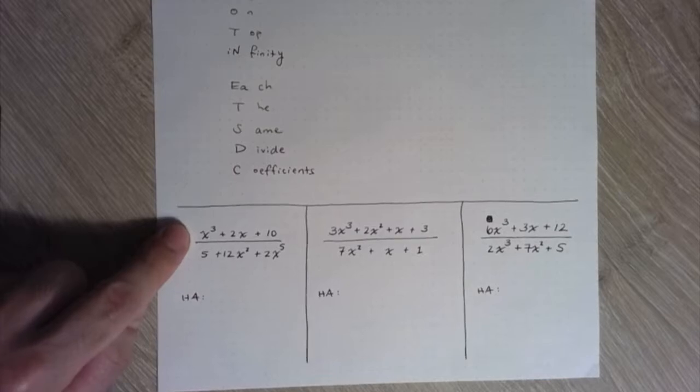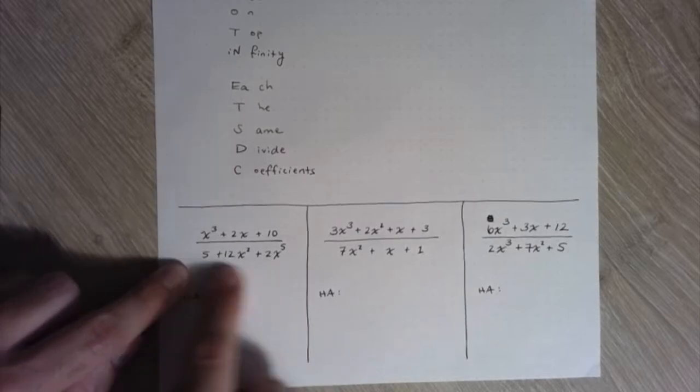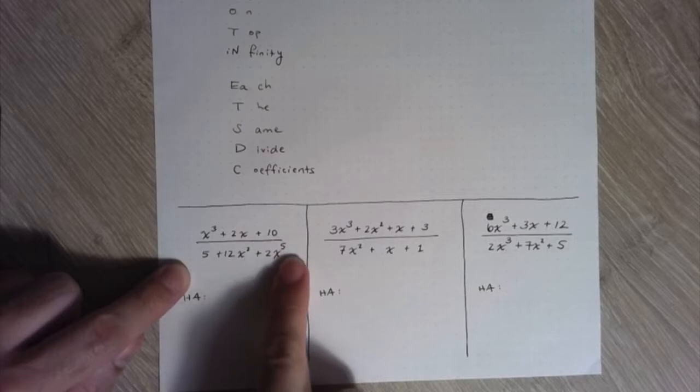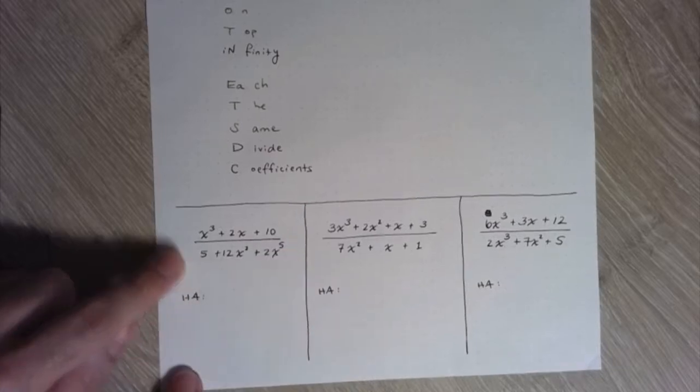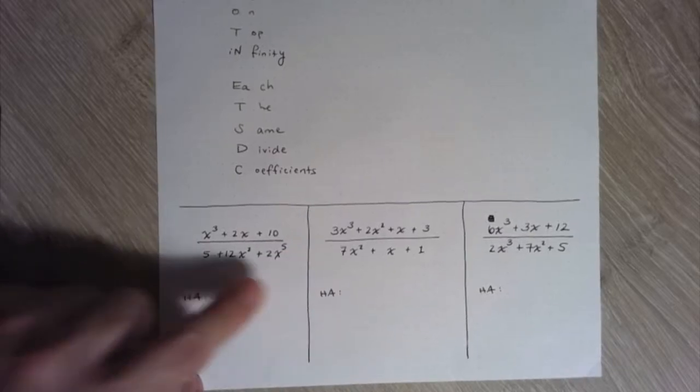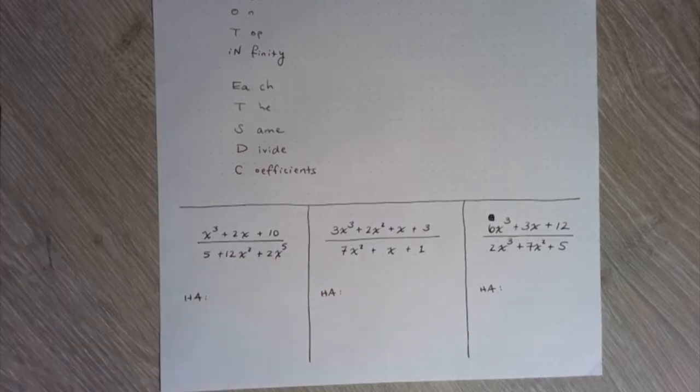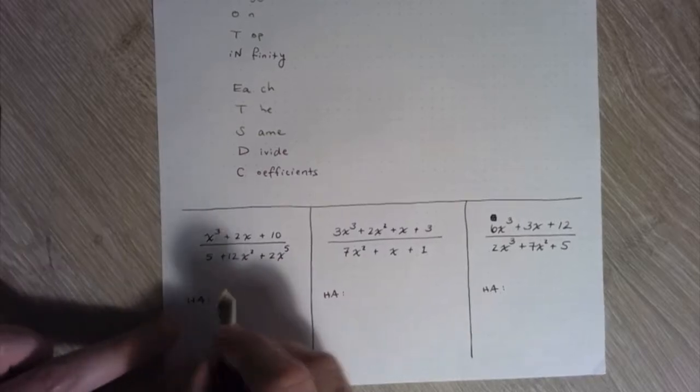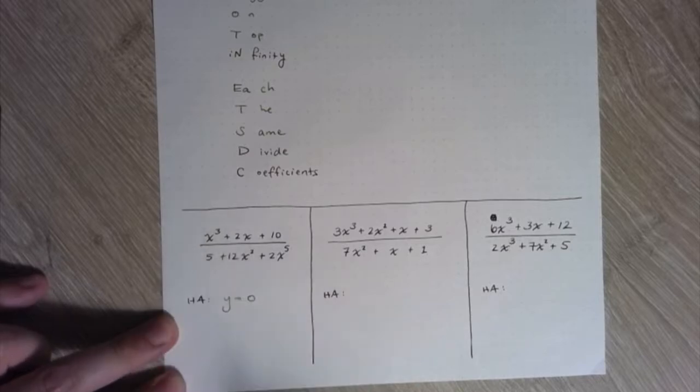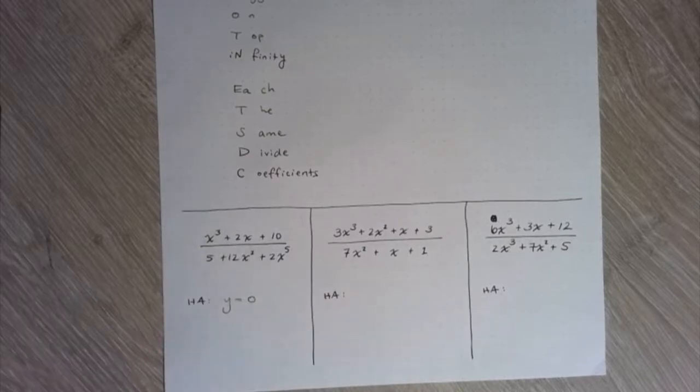So in the numerator, I have a 3. The largest exponent in the denominator, though, is a 5 over here, 2x to the fifth. So in this rational function, the biggest exponent is on the bottom. So that means we have a horizontal asymptote of zero. So y equals zero, a horizontal line is a horizontal asymptote.